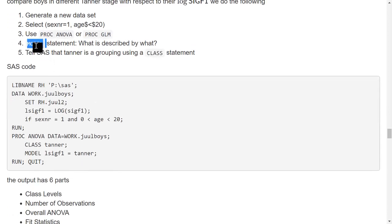I will put in a model statement saying what is described by what. So in this situation, the model statement says that log transformed SIGF1 is described by Tanner group. And then I tell SAS that Tanner is a grouping variable, and this is done using a class statement.